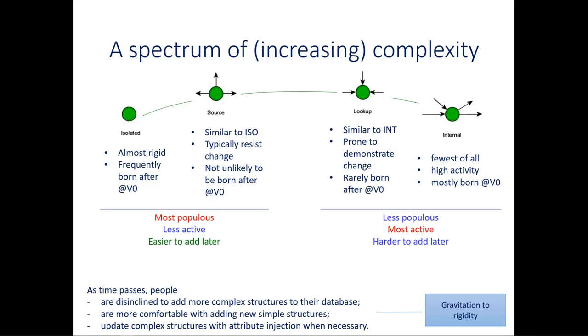And on the other side, you have on the right hand side, you have the internal tables, the furthest right, which are the fewest of all, they are the most active of all. And they are mostly born at the first version of the schema, which means they are not born later. Similar to them a little bit less active are the lookup tables. And so overall, this last mega category is less populous, more active, and harder to add as schema ages.